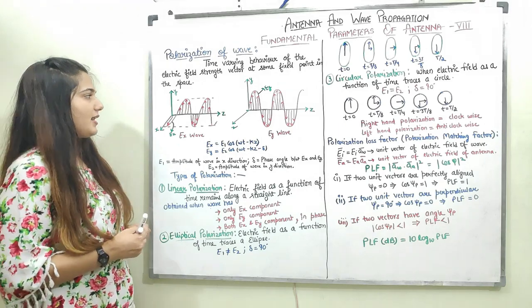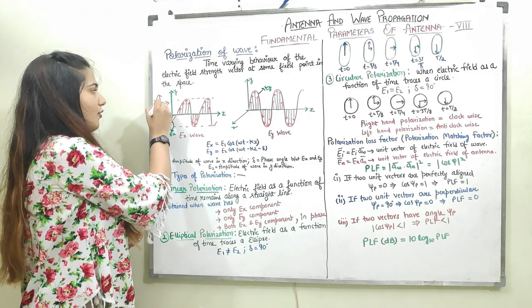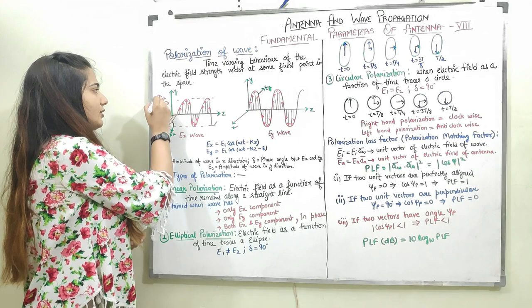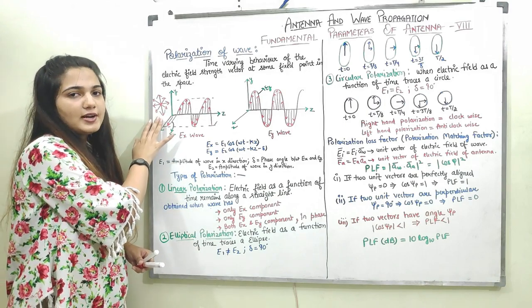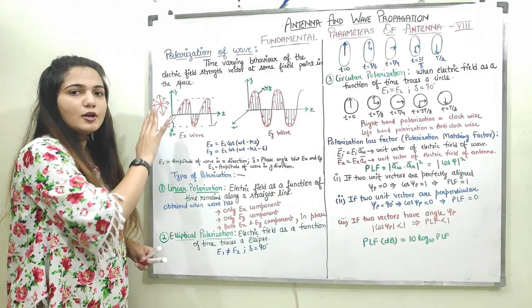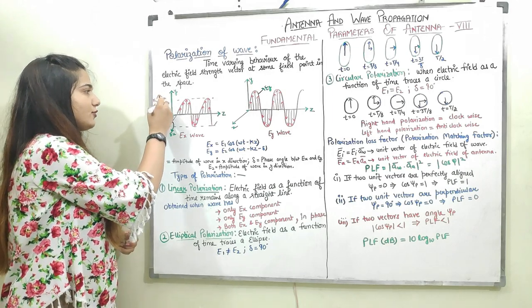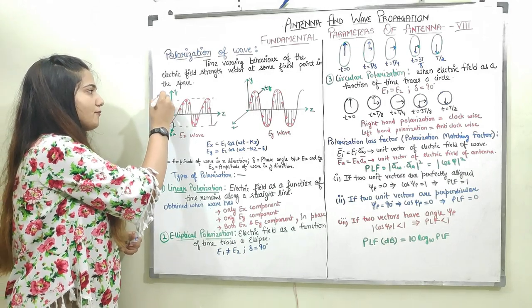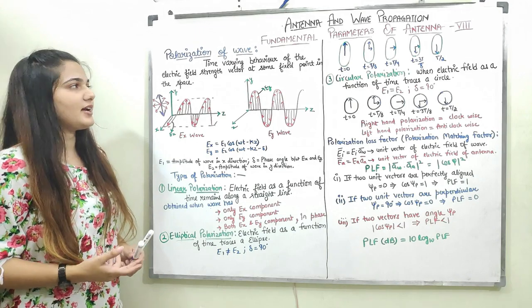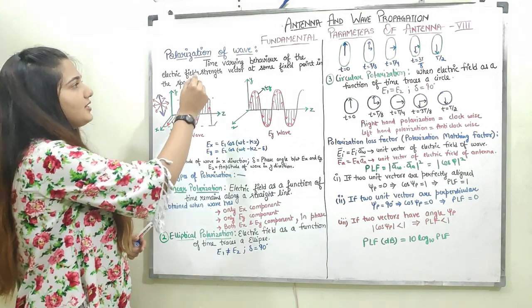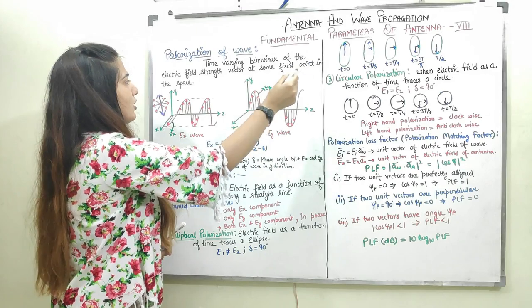What is orientation? I can align my electric field component in the vertical direction, horizontal direction, or in any other direction. If all the orientations are present in the same component, I call it a non-polarized wave. But when I restrict all components in all other directions and keep just a desired component — for example, the vertical component — that is basically called polarization. So polarization is the time-varying behavior of the electric field strength vector at some fixed point in space.